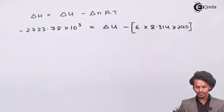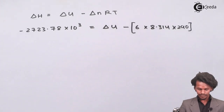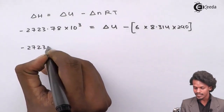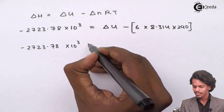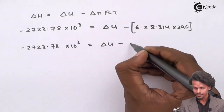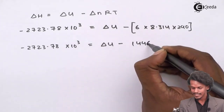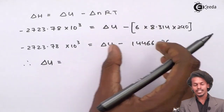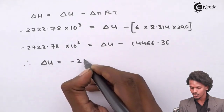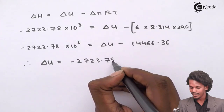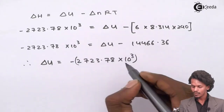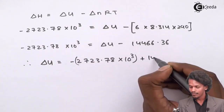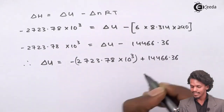Computing delta N·R·T = 6 × 8.314 × 290 = 14,466.36 J. Rearranging the formula: delta U = delta H − delta N·R·T = minus 2,723,780 + 14,466.36.